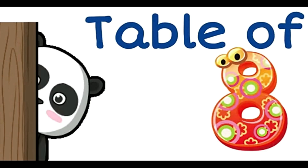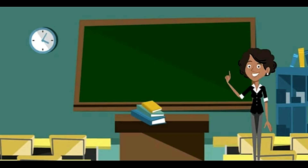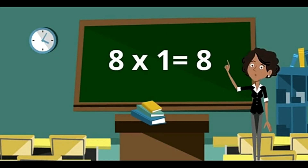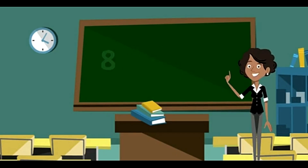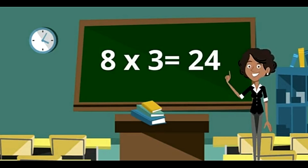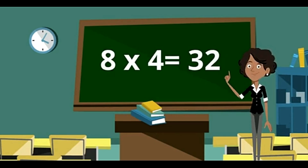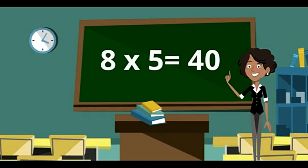Now table of 8. 8 ones are 8. 8 twos are 16. 8 threes are 24. 8 fours are 32. 8 fives are 40.